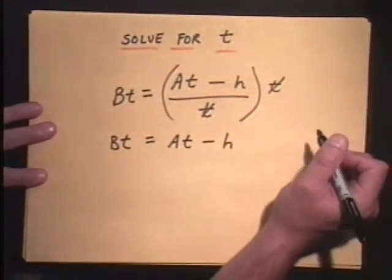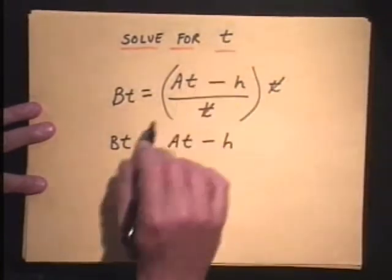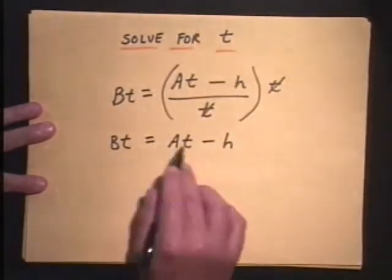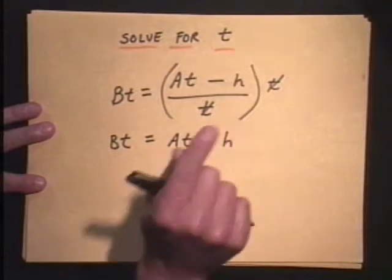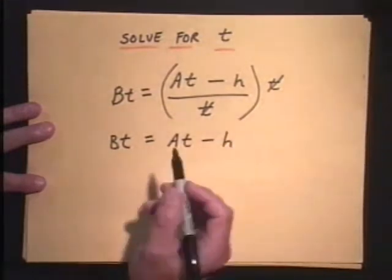Now, this is one similar to the last episode. We're after t, but we have t's on opposite sides of the equal sign. So don't just go dividing by B here to get t because you have more than one t. Be careful there. That's a key point.